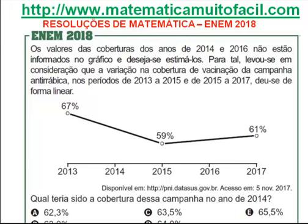Os valores das coberturas dos anos de 2014 e 2016 não estão informados no gráfico e deseja-se estimá-los. Para tal, levou-se em consideração que a variação na cobertura de vacinação da campanha antirrábica nos períodos de 2013 a 2015 e de 2015 a 2017 deu-se de forma linear. Ou seja, esse é um gráfico linear, que mantém a sua proporcionalidade.